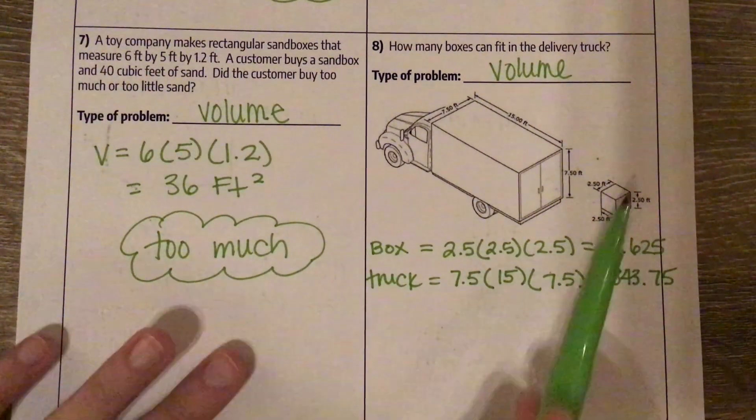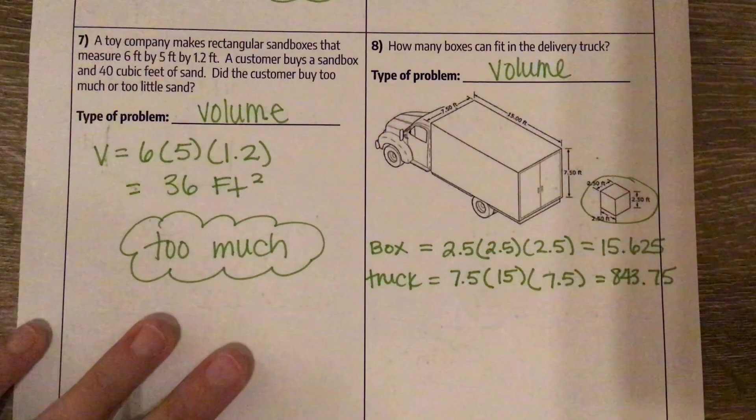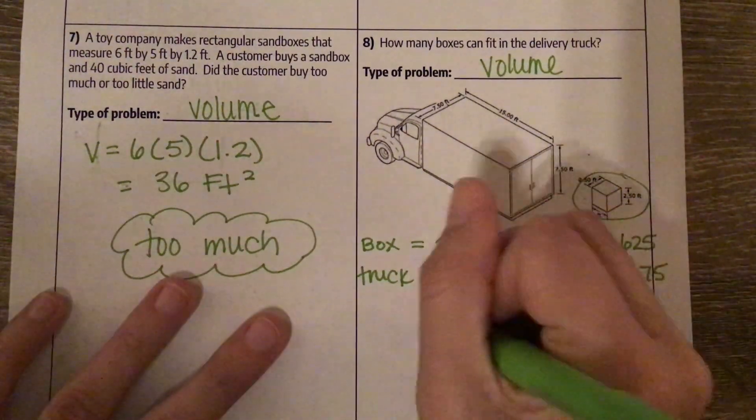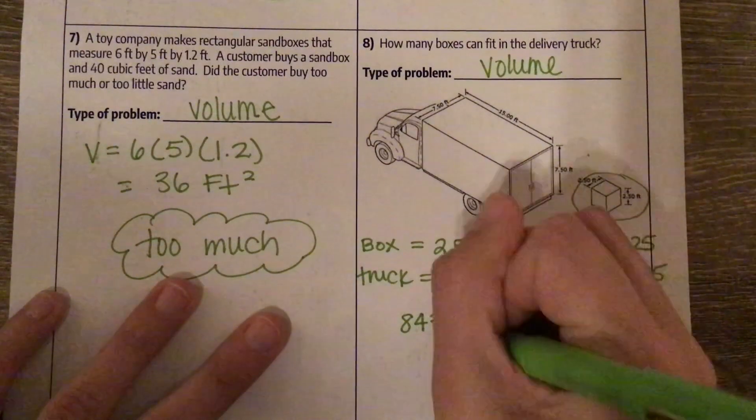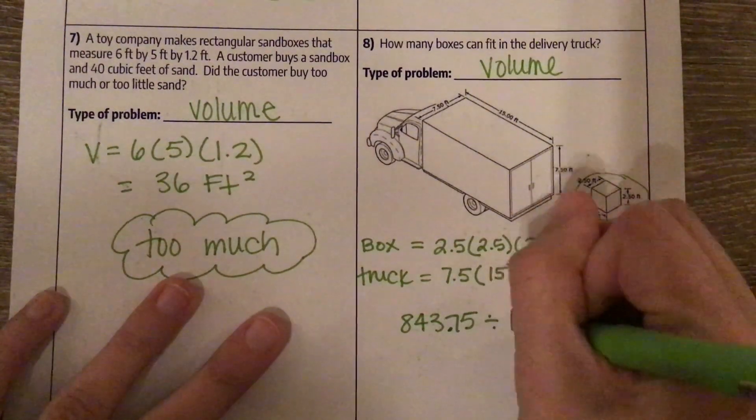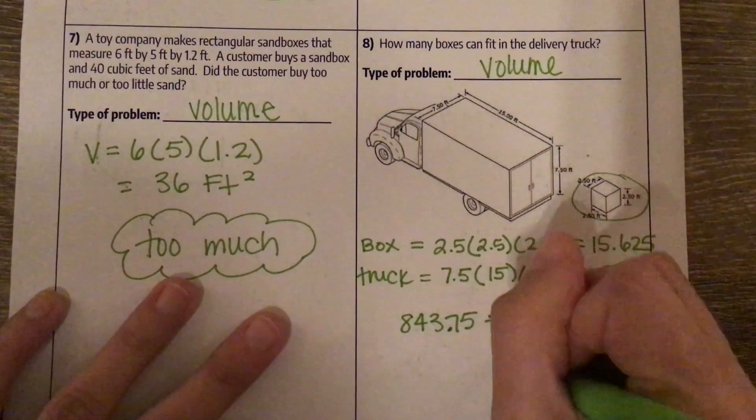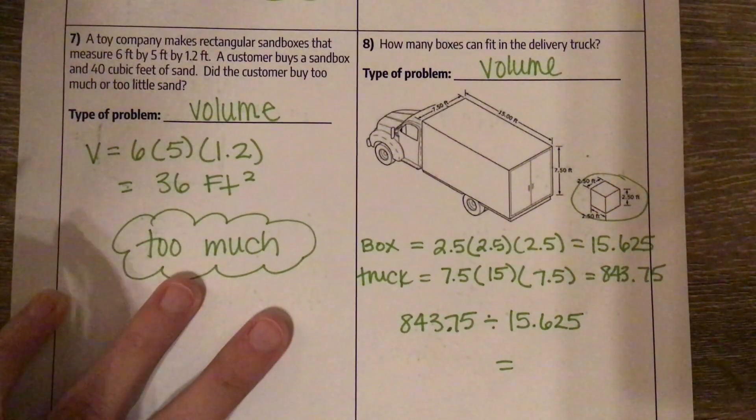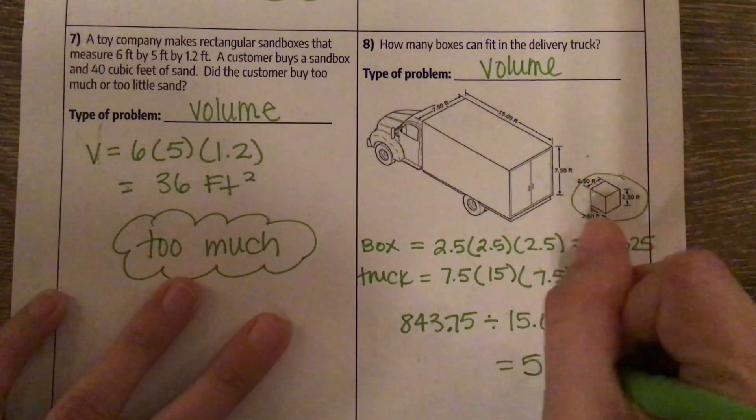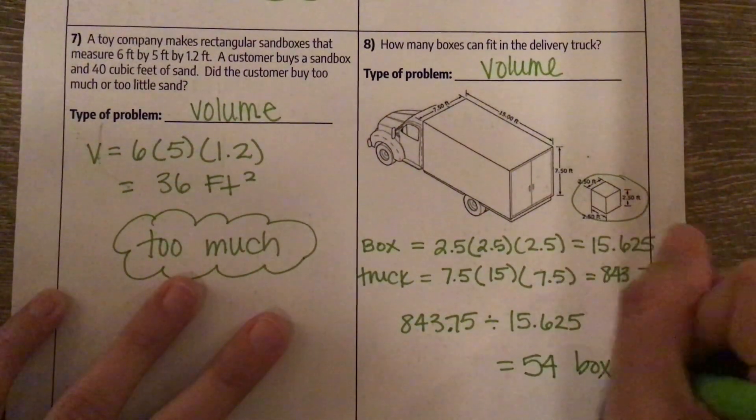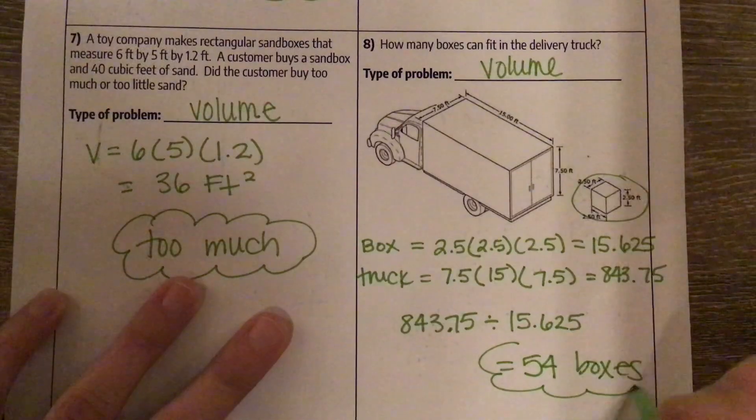And then we want to know how many of these boxes fit. So it's a division problem. We're going to do 843.75 divided by 15.625 and see how many fit. And when I divide, I get 54 boxes would fit.